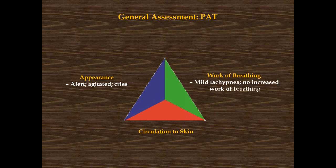Looking at his breathing, he may be breathing just a little bit fast but he is not working to breathe at all — not using accessory muscles, not positioning himself upright to breathe easier. It may just be on the high end of normal for him. Then we look at circulation to the skin. This is going to be interesting because he's African-American, so we really want to look at his mucous membranes since his skin pigmentation isn't going to tell us anything. We look on the inside of his lips and the mucous membranes in his eyes — and he is pale.